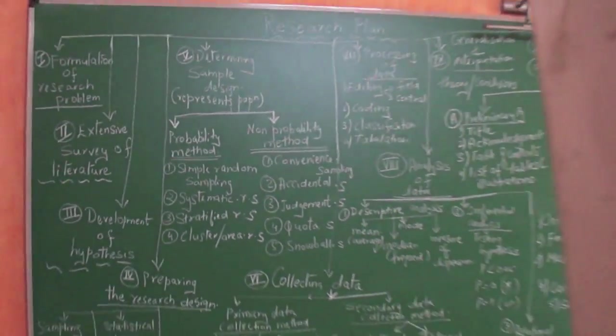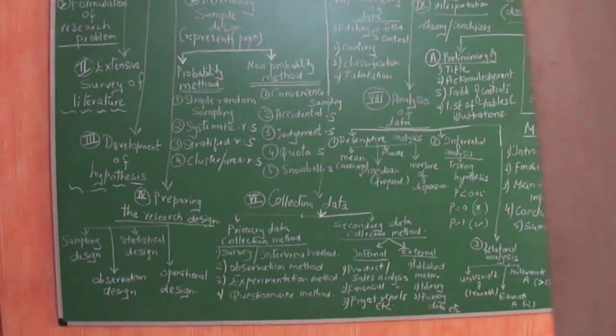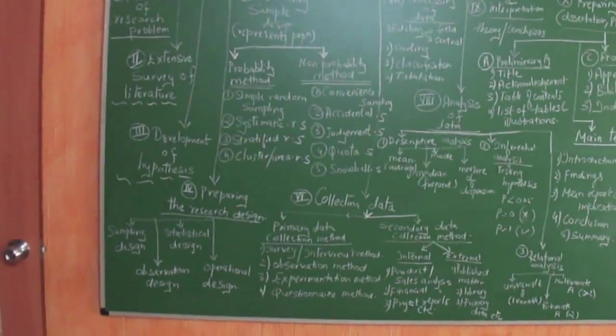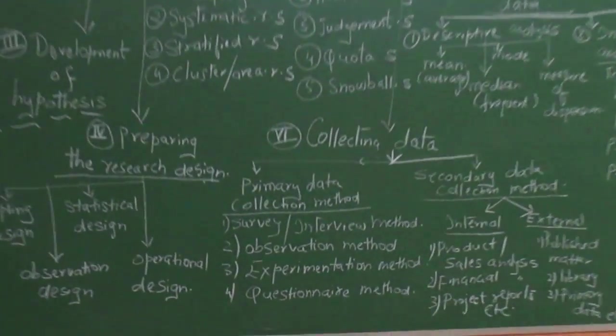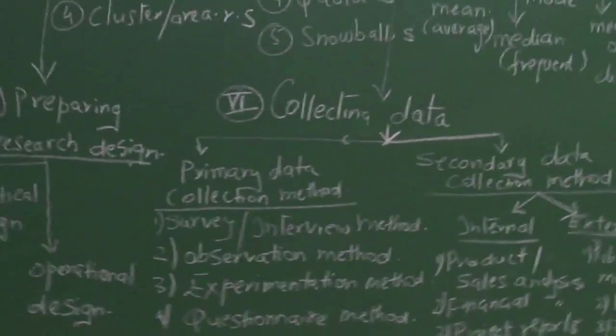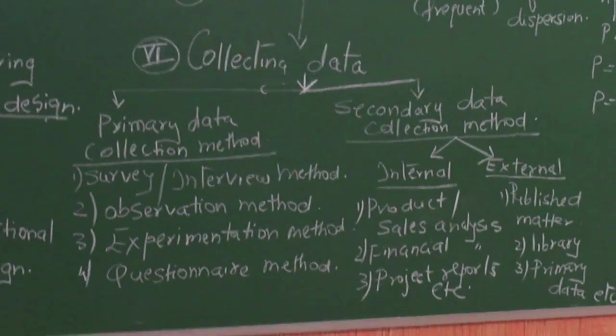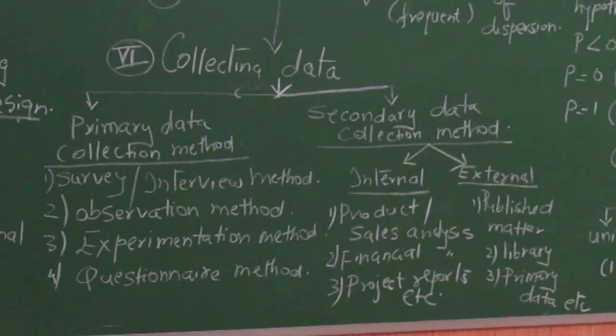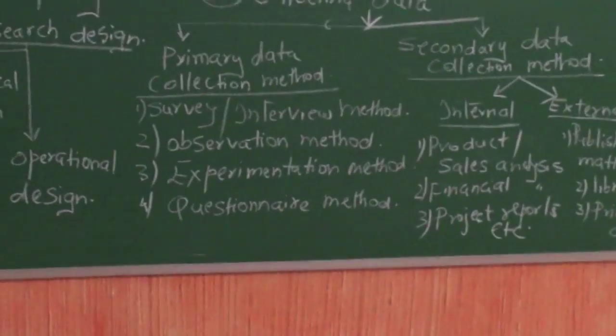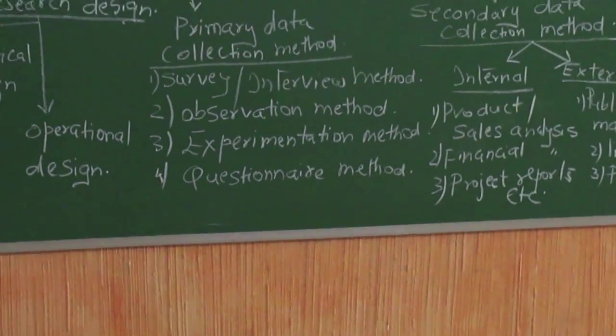The next one is after you have decided what is your sample, then you go to them and collect the data. When you are collecting data it can be divided into two: primary data collection method or secondary data collection method.